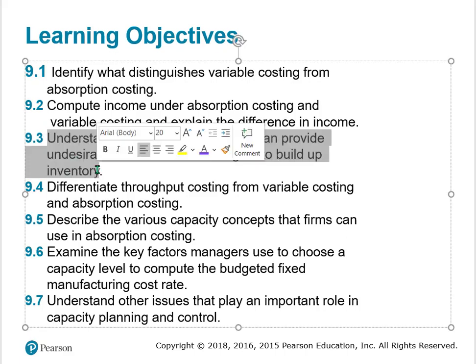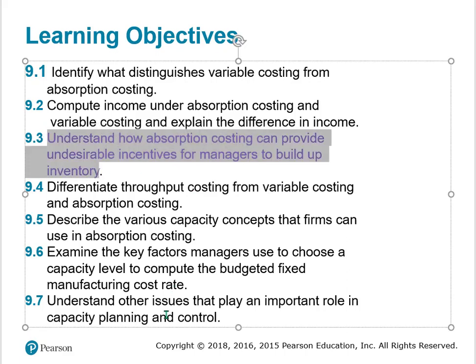We'll understand how absorption costing can provide undesirable incentives for managers to build up inventory. This is probably one of the most important things you want to know as accountants. You've really got to be aware of what a manager is doing — they know those numbers a lot better than you do. Understanding it well is a way to increase income, and even increase bonuses without anybody knowing.